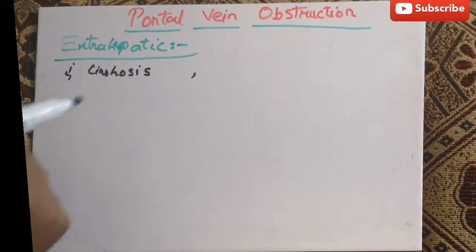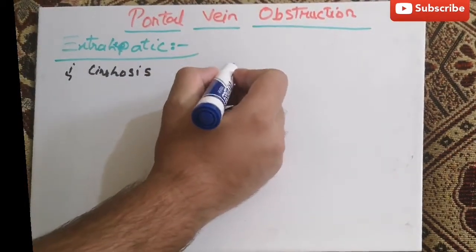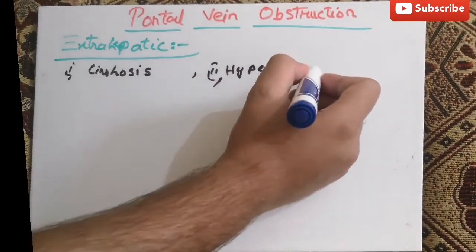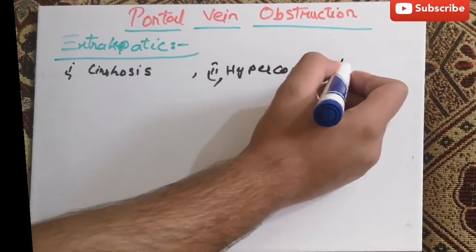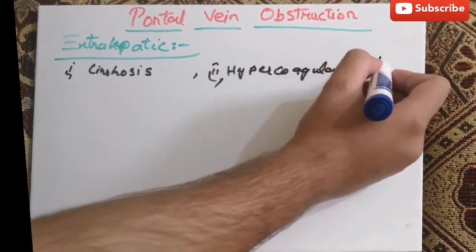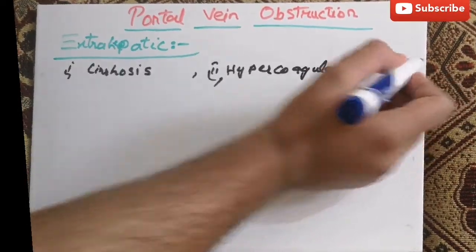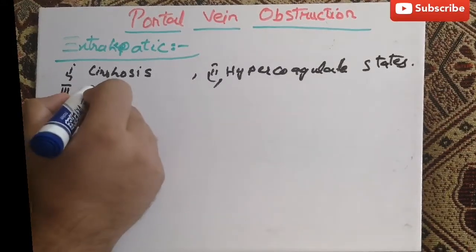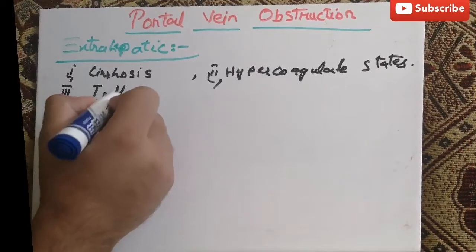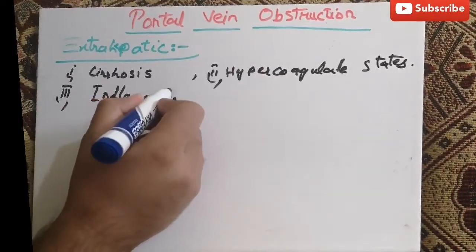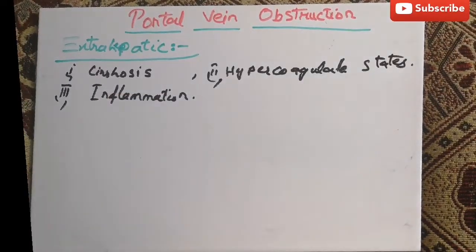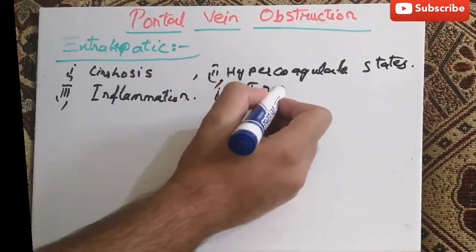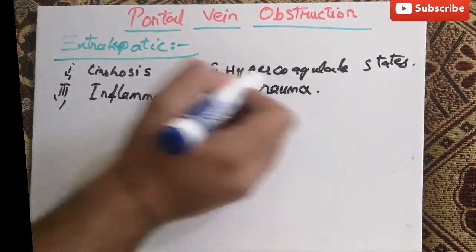The first cause is liver cirrhosis. The second cause is hypercoagulable states, such as antiphospholipid antibody syndrome. The third cause is inflammatory conditions like pancreatitis, and the fourth cause is trauma or surgery.